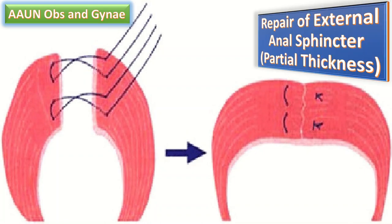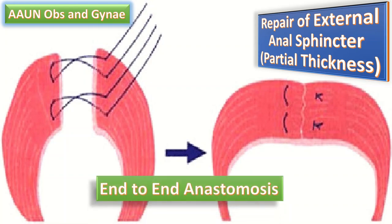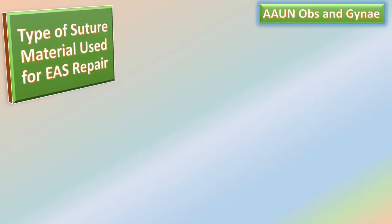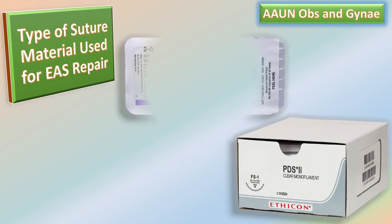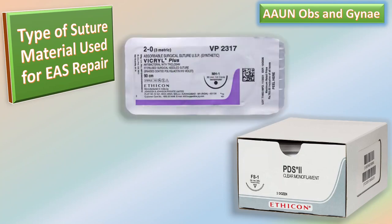For partial thickness external sphincter tears — grades 3a and 3b — an end-to-end technique should be used. The suture material for external sphincter repair is the same as for the internal sphincter: 3-0 PDS or modern braided sutures such as Vicryl sutures.